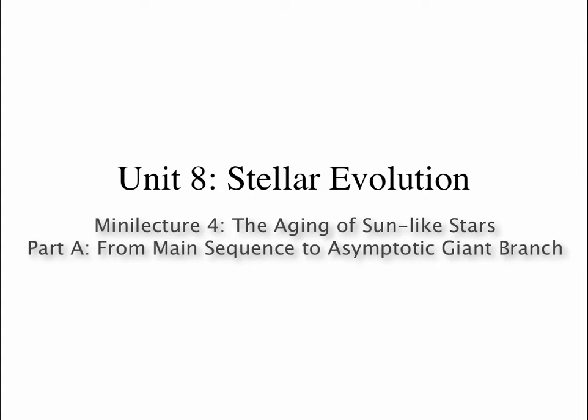Welcome back for our third mini-lecture on Unit 8, which is Stellar Evolution. In this mini-lecture, we'll talk about the aging of sun-like stars. By sun-like, I mean low-mass stars — stars that are like the mass of the sun or less massive. In our next mini-lecture, we'll talk about stars that are many times the mass of the sun, and we'll find that their aging processes have some similarities but some differences. The material in this mini-lecture is found in Chapter 20, Sections 1 to 3. If you don't remember our talks about the structure of the sun, how it produces energy, and how it stays stable, you may want to review the mini-lectures for Unit 6 on the sun.